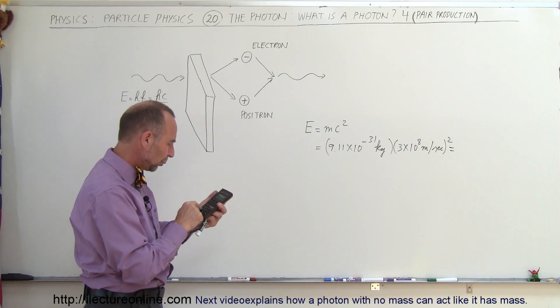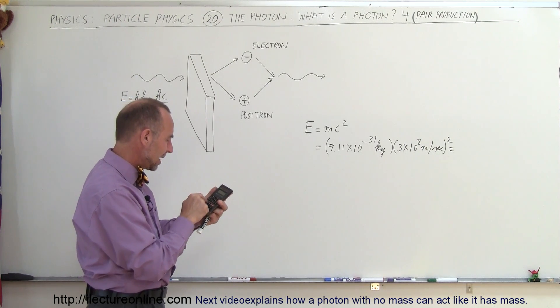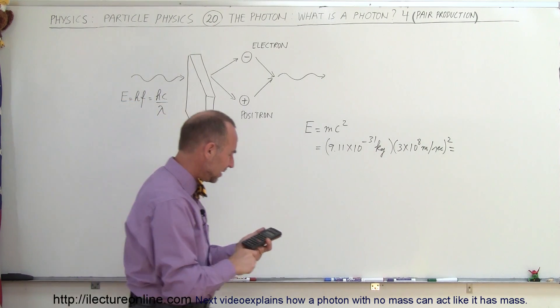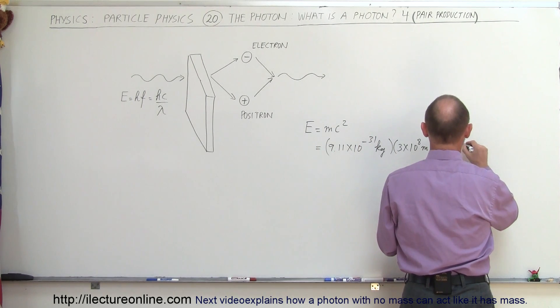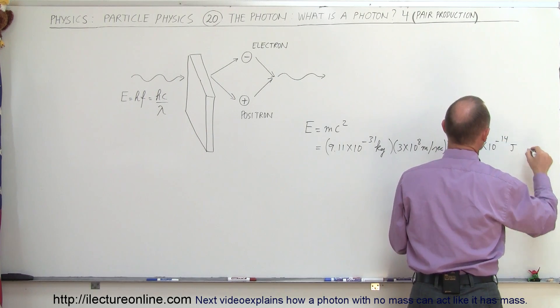So 9.11 E to the minus 31 times 3E to the 8 squared equals, and the energy you need would be 8.2 times 10 to the minus 14 joules.